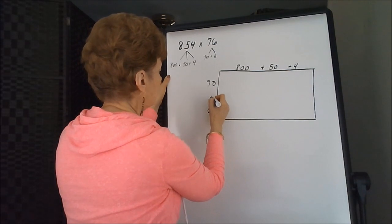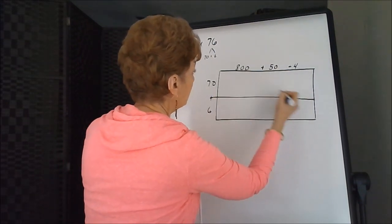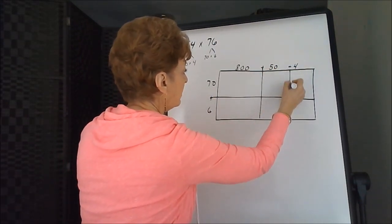Where you see your plus signs, that's where your line goes. Here I have two plus signs, so I have to make two boxes.